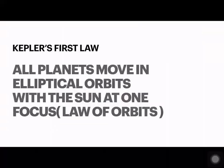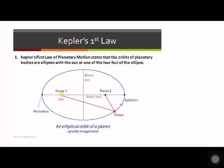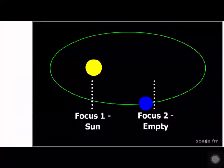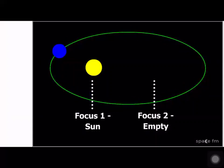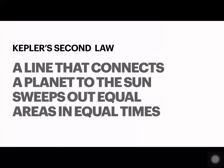Let's go through them again. The first law: all planets move in elliptical orbits with the sun at one focus. The second law: a line that connects a planet to the sun sweeps out equal areas in equal times — we call this the law of areas.